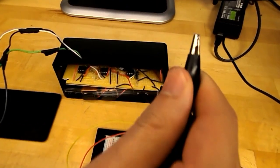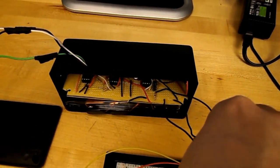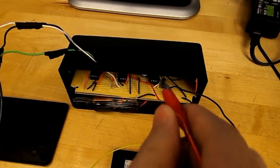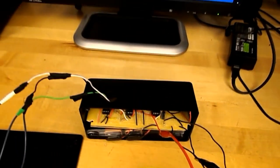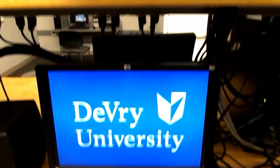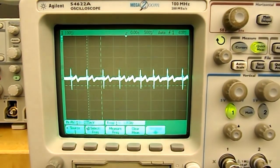Now we're going to connect this black wire from the oscilloscope to our ground on the ECG. And the red wire goes to our output of the ECG. There's our signal.